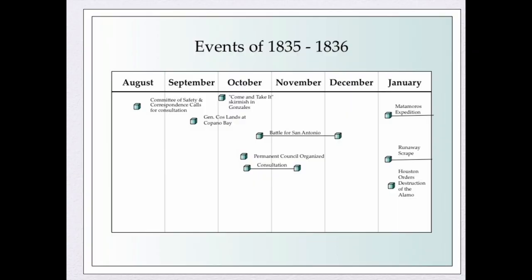Here is a timeline of events from about 1835 to 1836. Starting in August of 1835, Texas settlers began organizing committees of safety and correspondence, much as had happened during the American Revolution. Mexico sent General Cos to land at Copano Bay near Victoria. One of his duties was to go to Gonzales and retrieve a cannon that had been loaned to Texan settlers there — and this starts the whole 'Come and Take It' event.